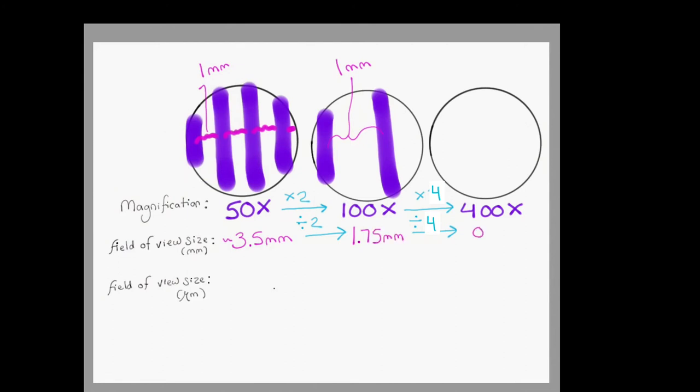Now we can use this same idea to calculate the field of view at 400x magnification. We know as we increase magnification from 100 to 400x, then we divide the field of view by 4, so that gives us 0.44 millimeters.